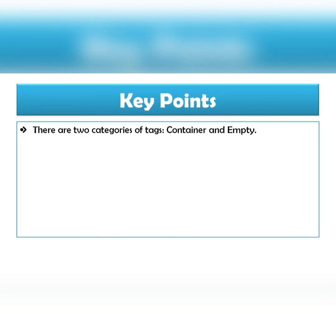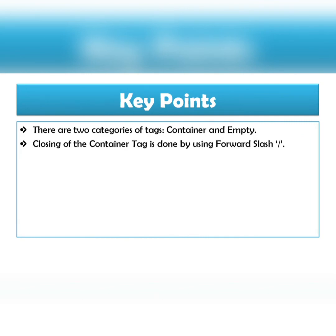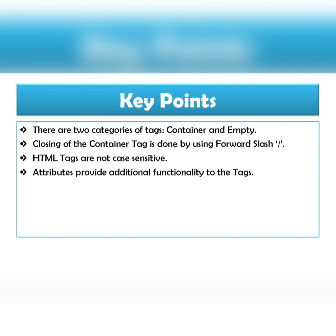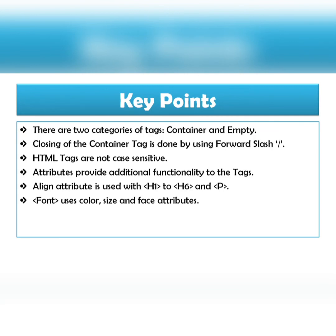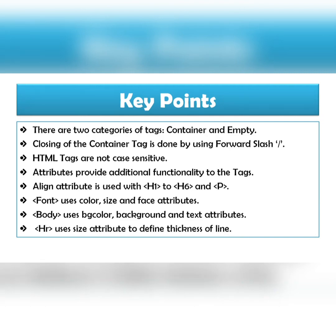Let's quickly have a look at the key points of this video. HTML mein do categories of tags hote hain: container and empty. Aaj humne do empty tags use kiye — BR tag line breaks insert karne ke liye, aur HR tag horizontal lines draw karne ke liye. Closing of container tags is always done using a forward slash. HTML tags case sensitive nahi hote. Attributes aapke tags mein additional functionality provide karte hain. Align attribute heading tags aur paragraph tag ke saath use kiya jaata hai. Font tag ke saath teeno attributes use kiye — color, size, and face. Body tag ke saath bgcolor, background, aur text attribute use kiya. HR tag ke saath size attribute use kiya to define the thickness of the line on the webpage.